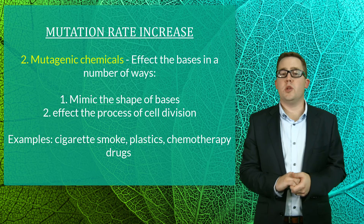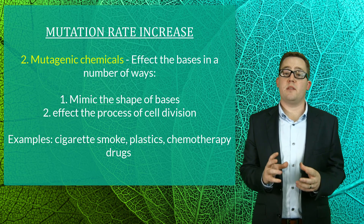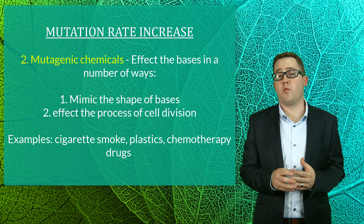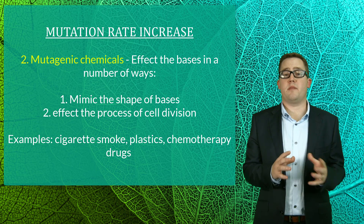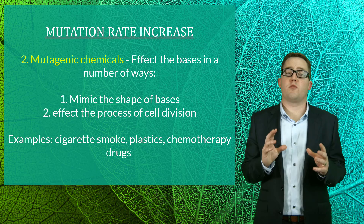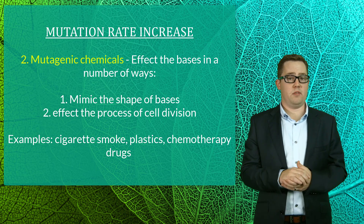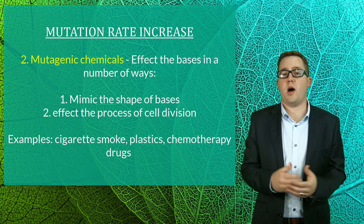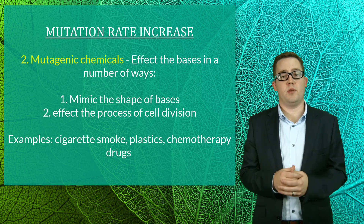The second factor is mutagenic chemicals. These chemicals can cause changes to particular bases, and can affect cells in a number of ways. They could mimic the shape of normal bases and thus disrupt the DNA replication process, or they could disrupt the process of cell division leading to entire chromosomal errors. Some examples of mutagenic chemicals include benzopyrenes in cigarette smoke, vinyl chloride found in plastics, and many chemotherapy drugs.